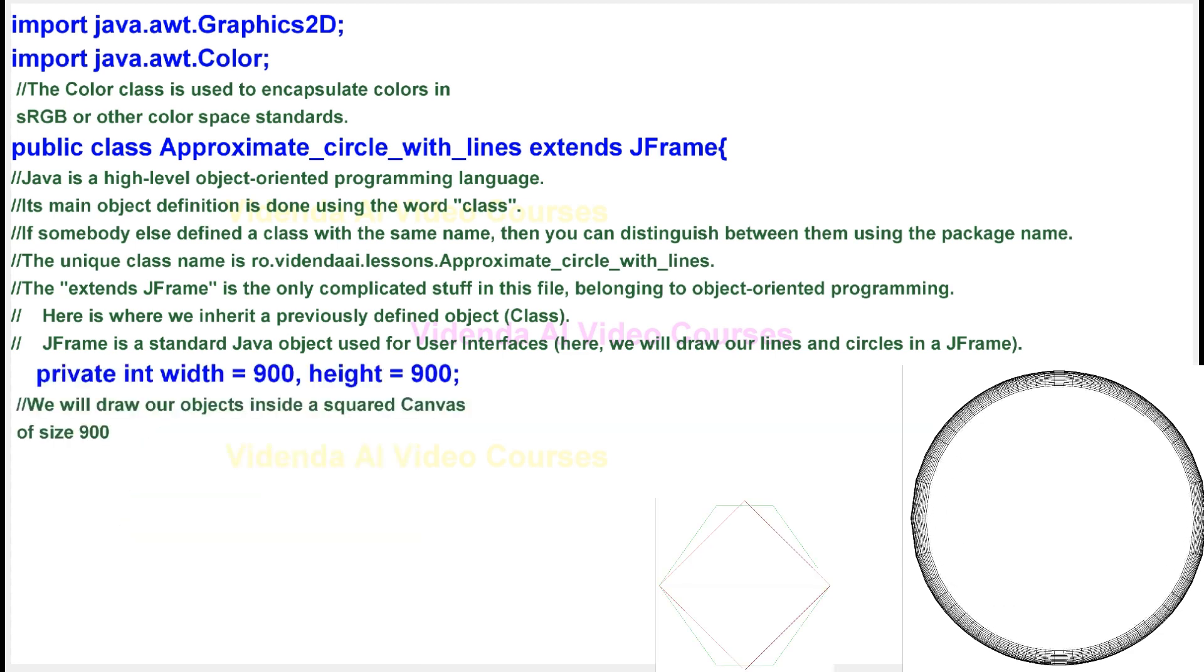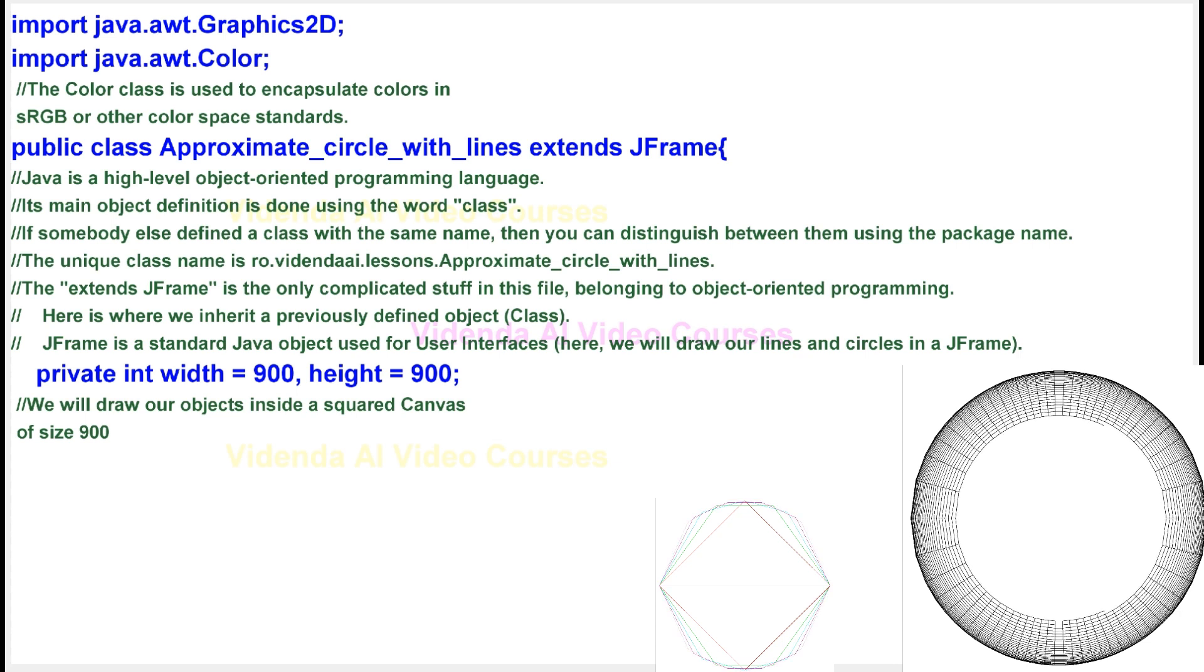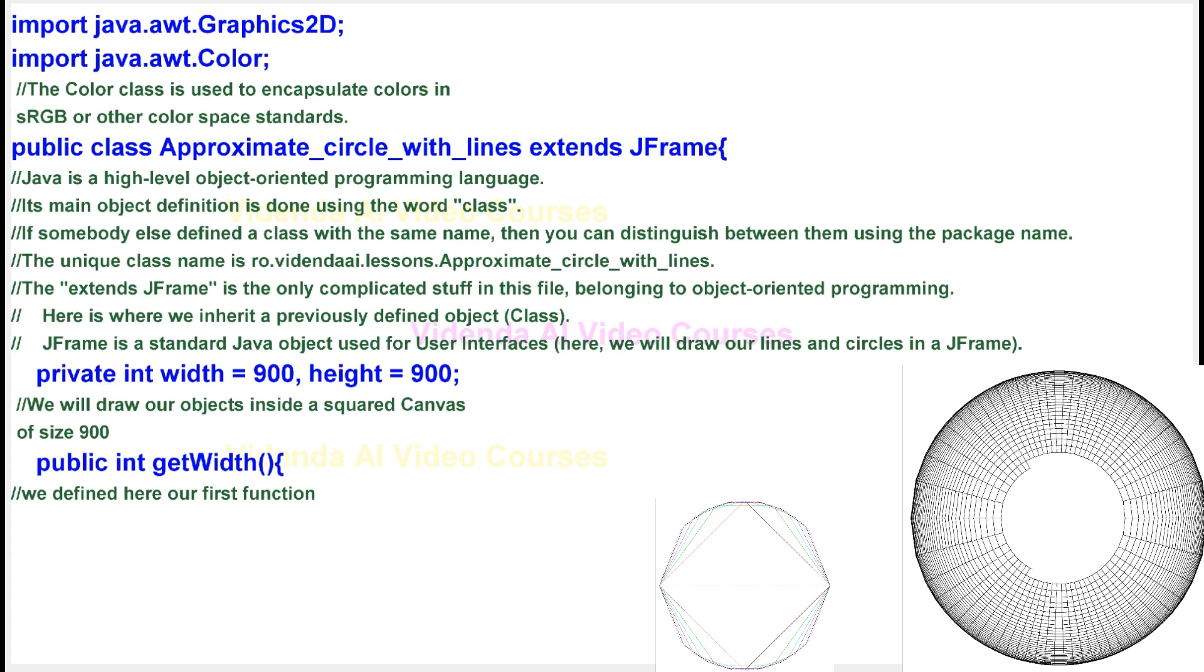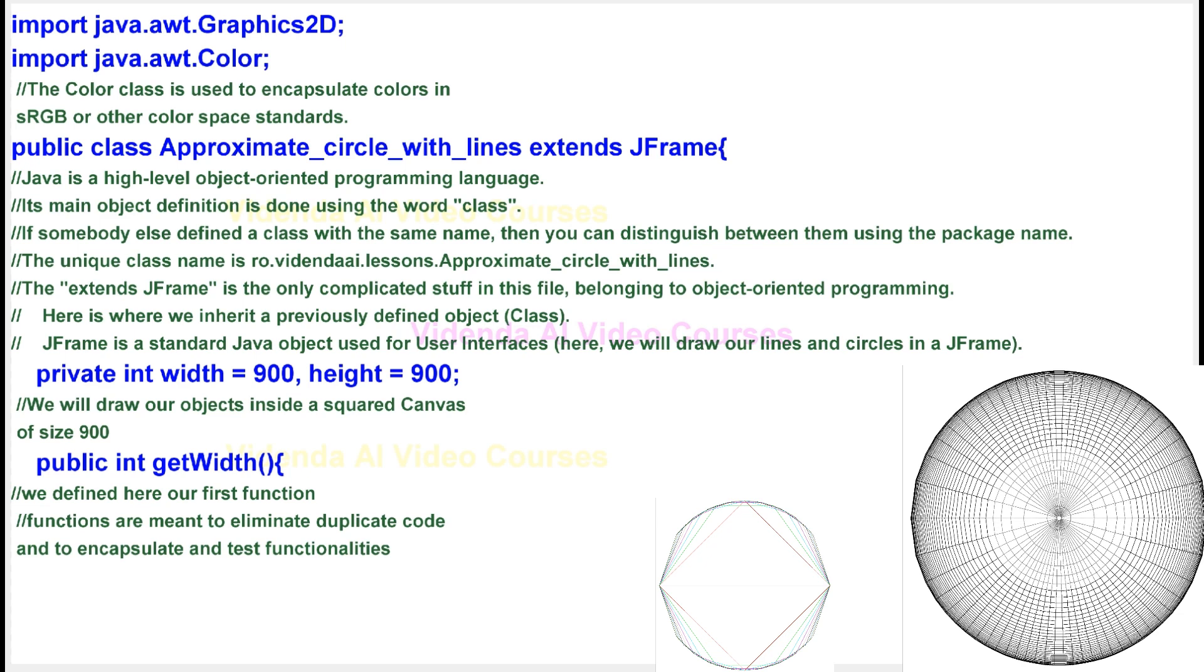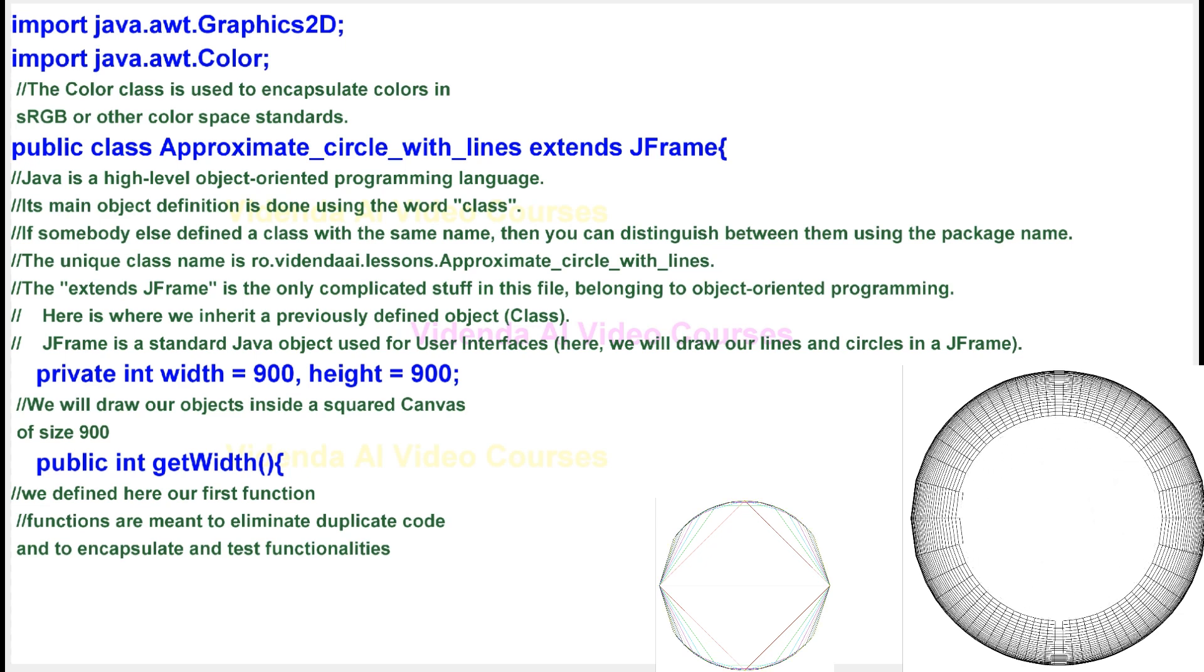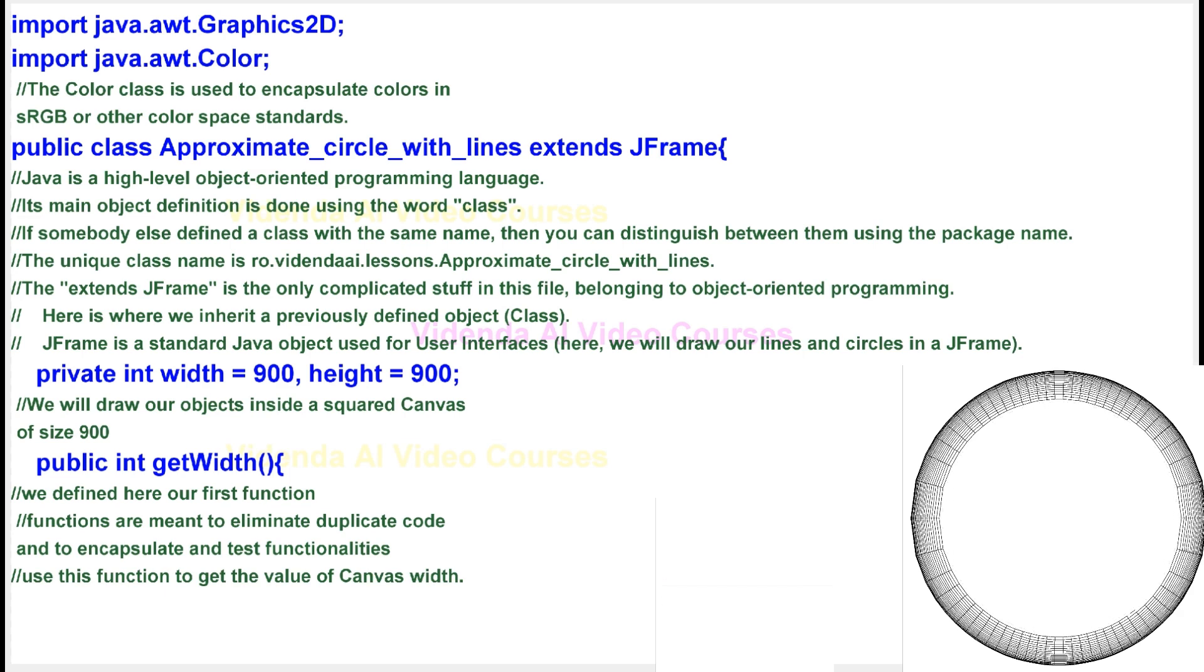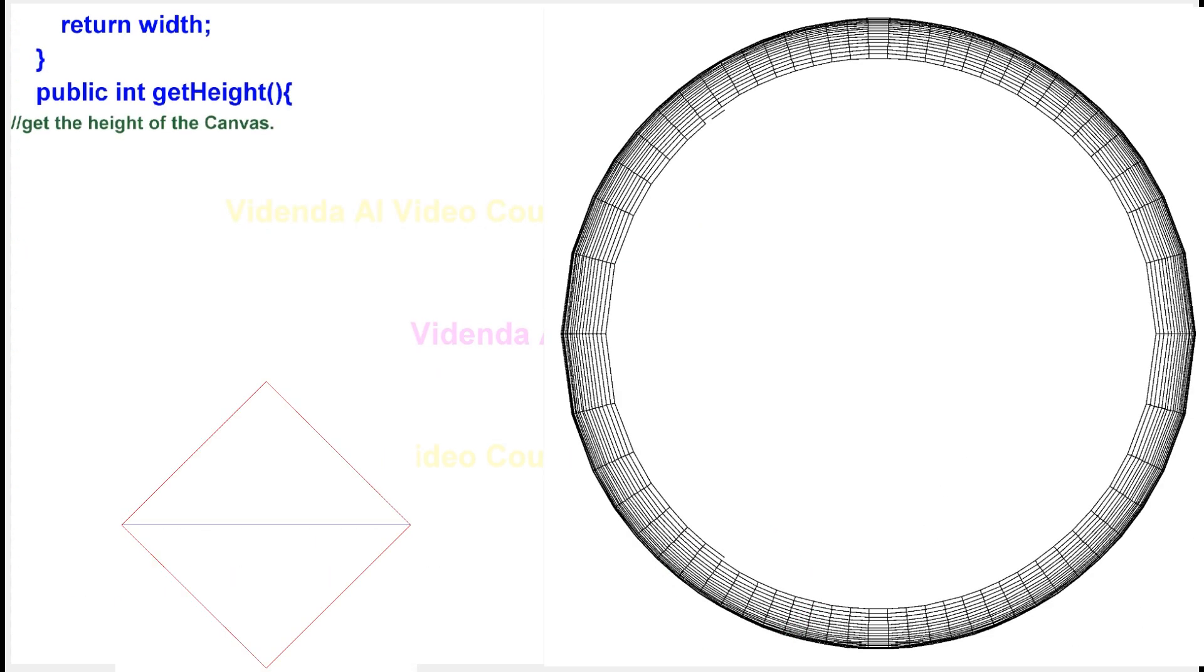We will draw our objects inside a squared canvas of size 900. We defined here our first function. Functions are meant to eliminate duplicate code and to encapsulate and test functionalities. Use this function to get the value of canvas width. Get the height of the canvas.